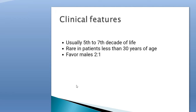Now the clinical features of the lateral periodontal cyst: it usually presents in the fifth to seventh decade of life and is rare in patients less than 30 years of age. It favors males more predominantly, with a male-to-female ratio of two to one.